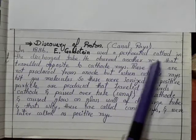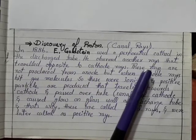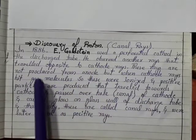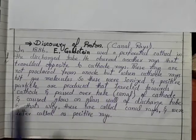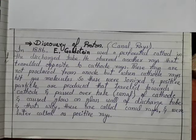In 1886, E. Goldstein used a perforated cathode in the discharge tube. He observed that rays traveled opposite to the cathode rays. Goldstein used a perforated cathode in the discharge tube which was previously used by J.J. Thomson. It was called the discharge tube experiment.